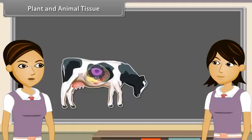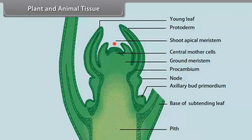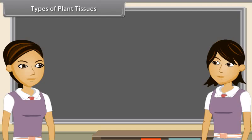Animals are heterotrophic and have to move around in search of food, mate and shelter, so they need more energy compared to plants. That is why most of the tissue in animals is living. One more big difference between plants and animals is the pattern of growth. The growth in plants is limited to some regions where dividing tissues are present, while in animals the growth is uniform and not restricted to specific places. In animals, structural organization of organ systems is more specified and localized.